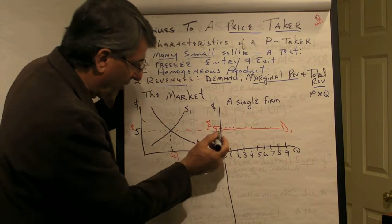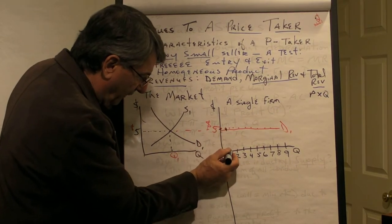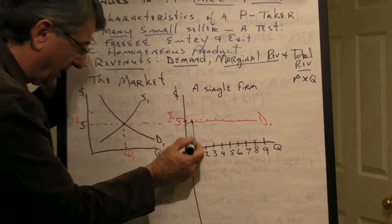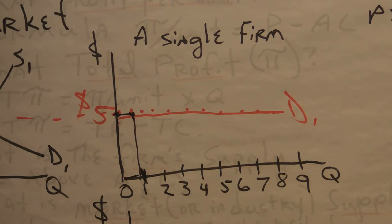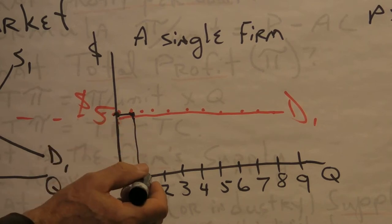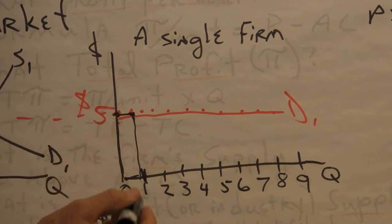So when the firm sells one unit at $5, this area here, this area represents the total revenue when they sell one unit. It's $5.00 high and one unit wide.